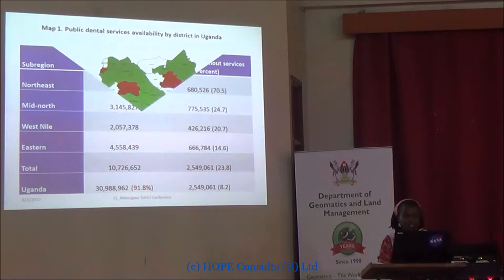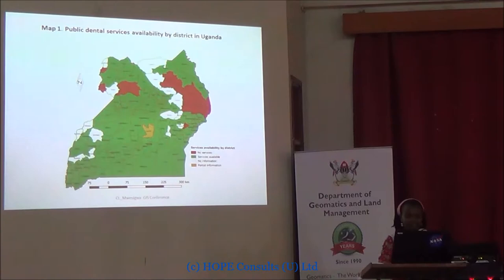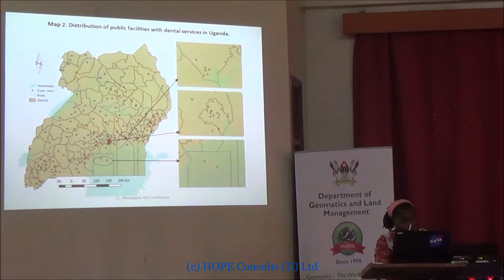This is a map showing which facilities are where. The red shows those districts that do not have public dental facilities — the 15 districts with no dental facilities. The white areas show the districts for which information was not available. The green areas show those areas that have oral health services. A small yellow area had only partial information but did have at least one facility with dental services.